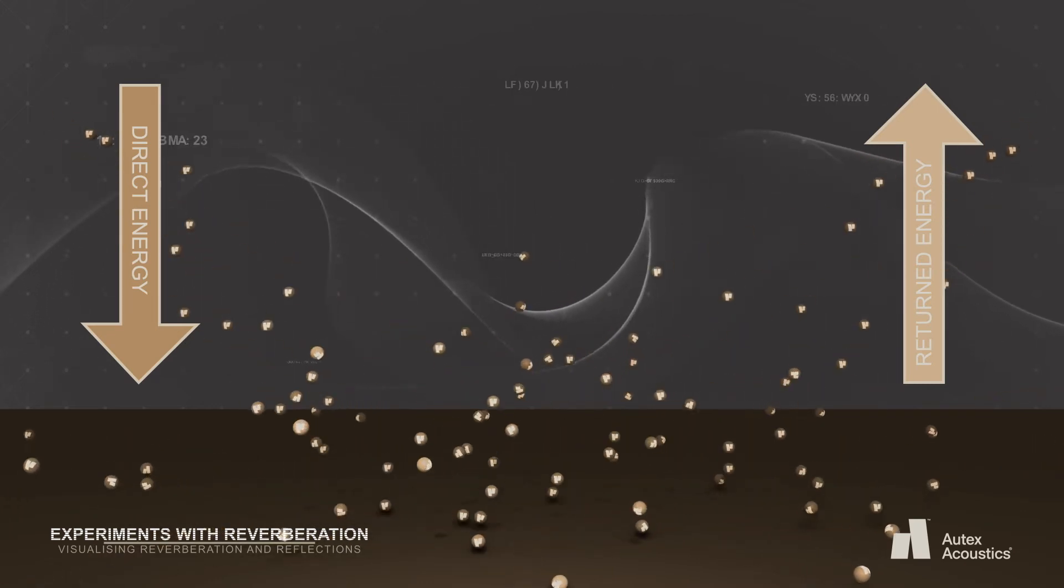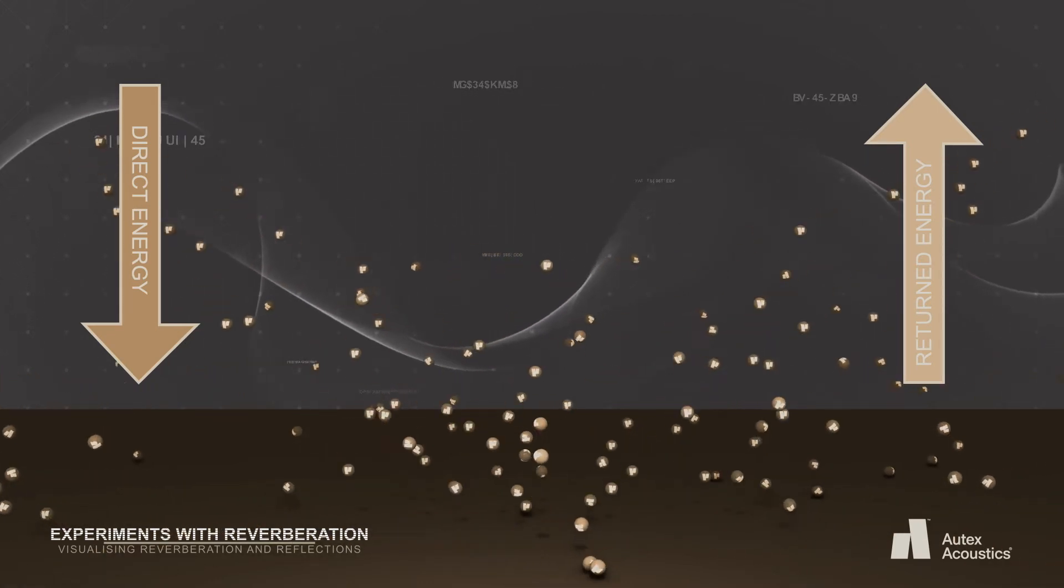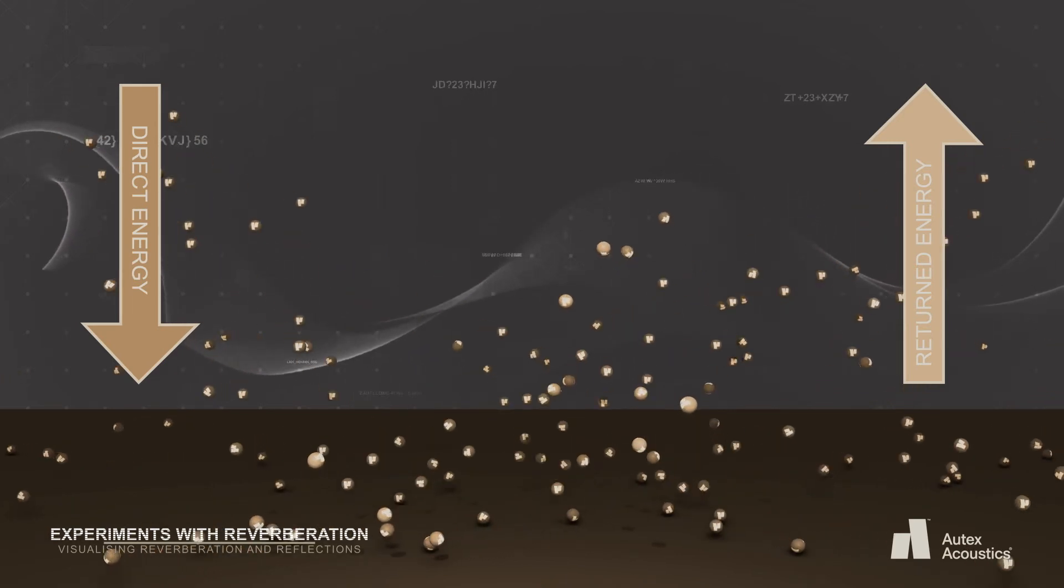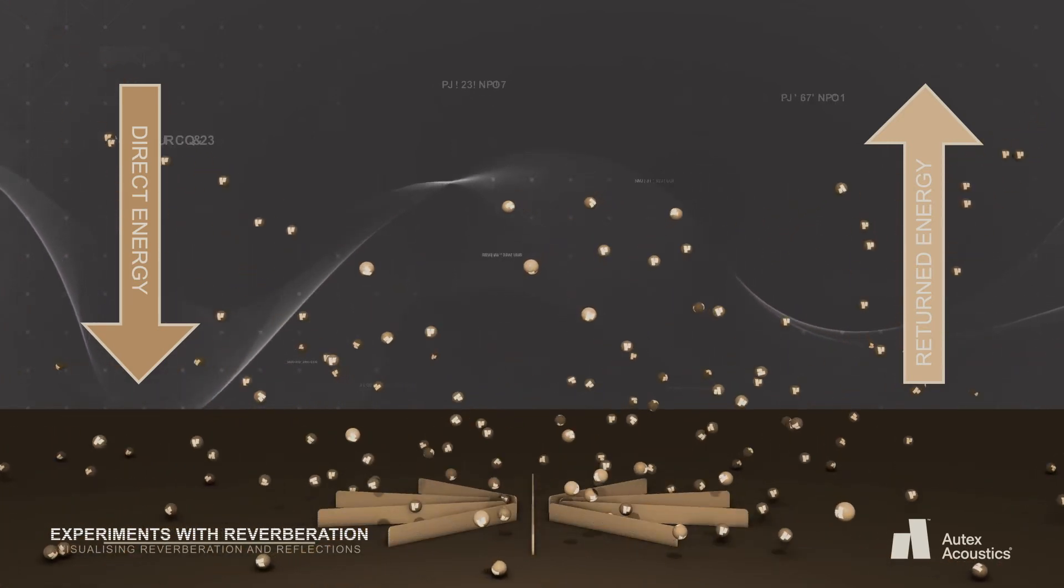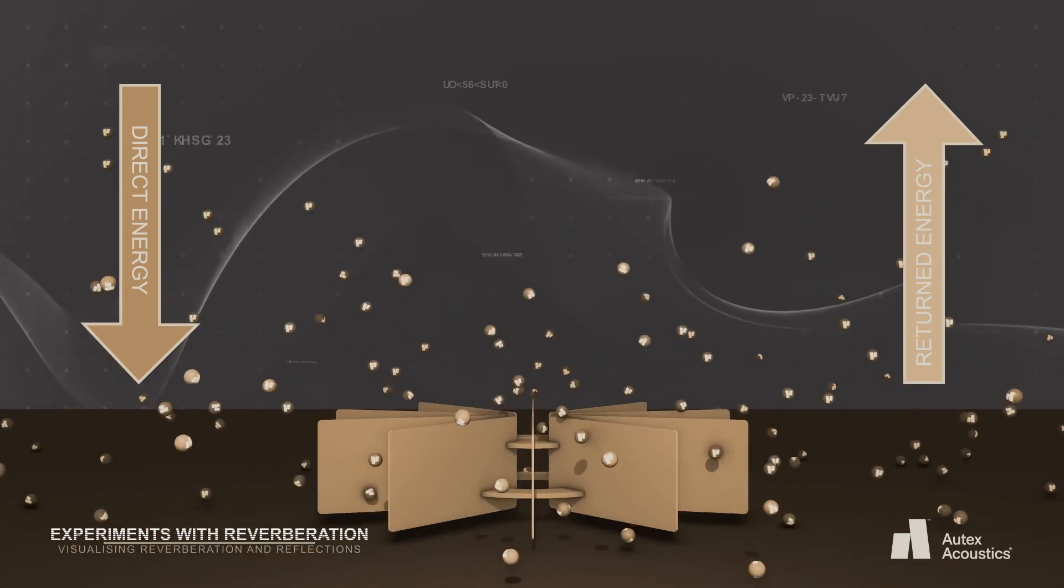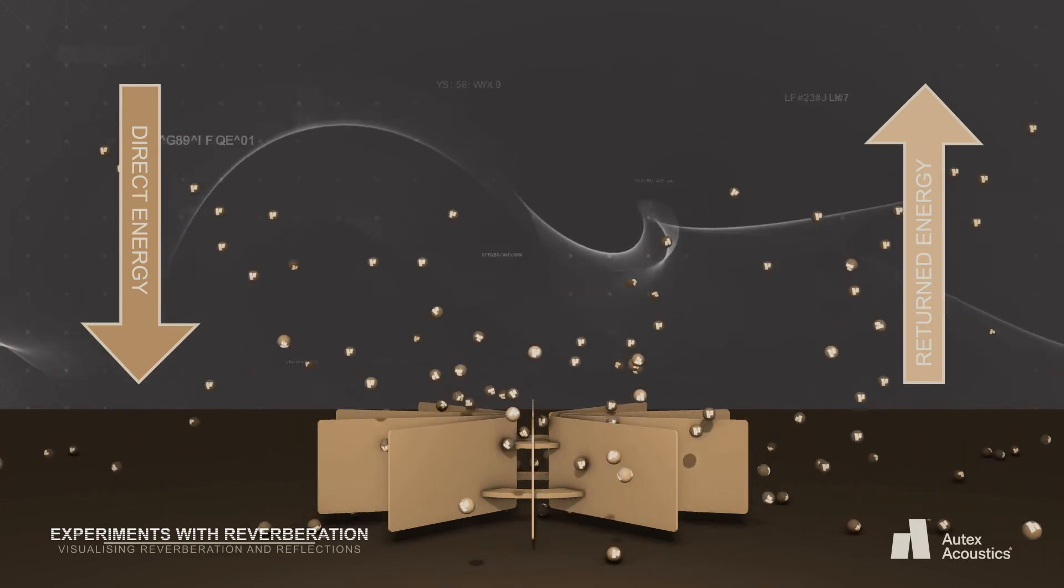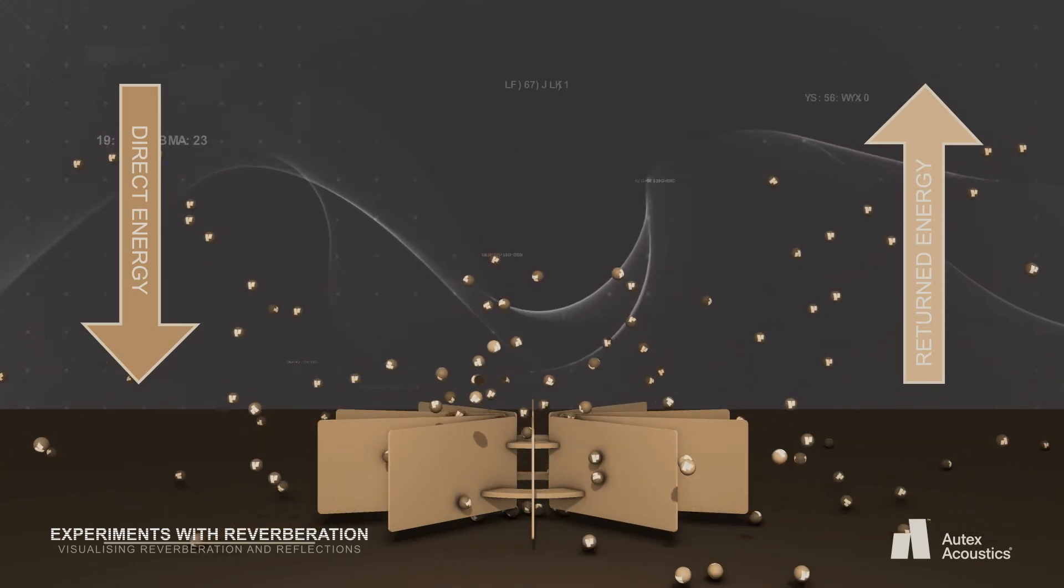Here we can see sound energy coming from two directions. In reality, sound comes from all directions within a space. Now we introduce an acoustic structure like a suspended lattice object that is engineered to trap energy from all directions.